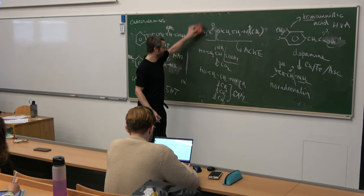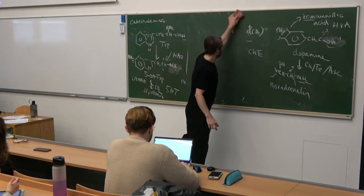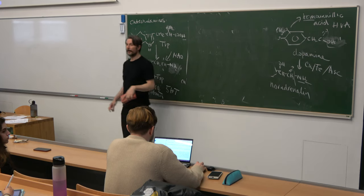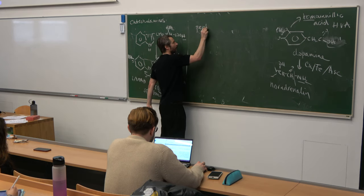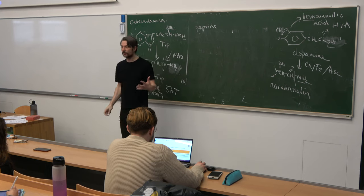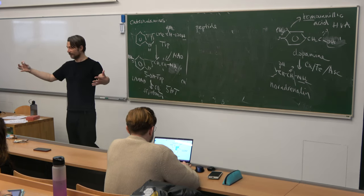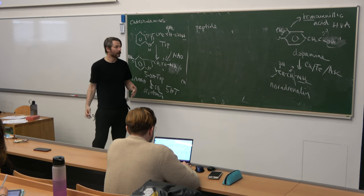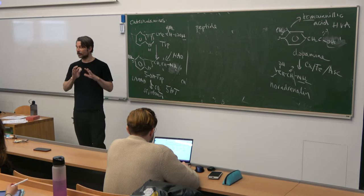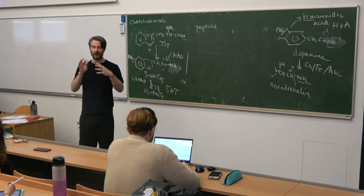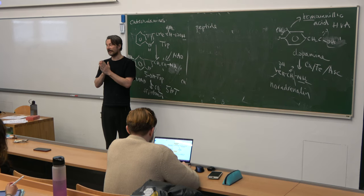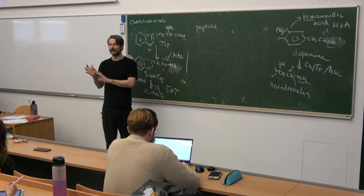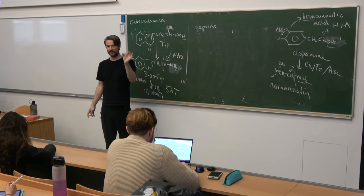The last category is peptide neurotransmitters — neurotransmitters composed of more than one amino acid. There are quite a few of them. The important point about peptides is that they are mostly, if not entirely, synthesized in the nucleus, as all proteins are.